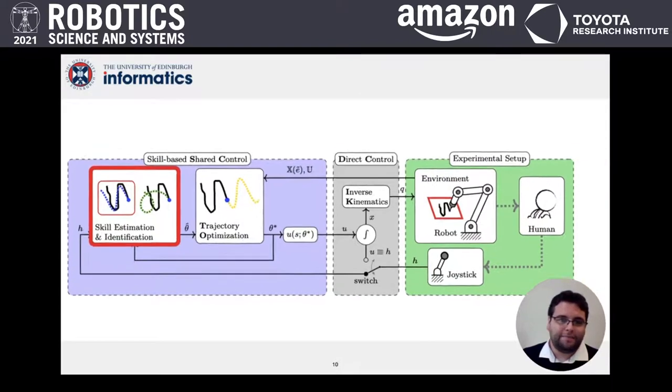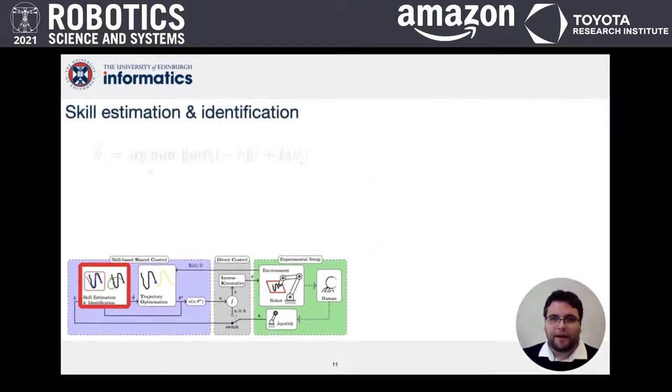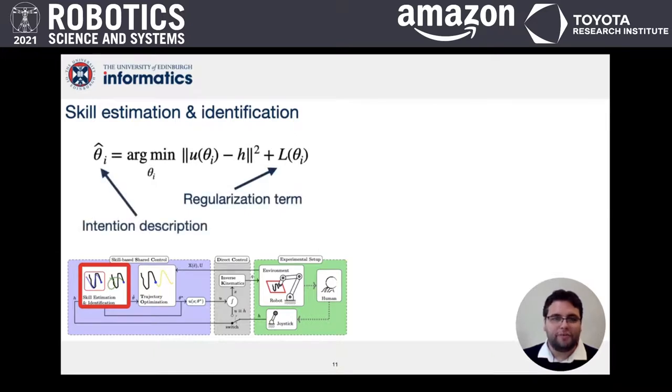We search within the parameter space by solving a non-linear regression optimization. We assume there may be a set of skills available to the operator, each with a given parameterized model.